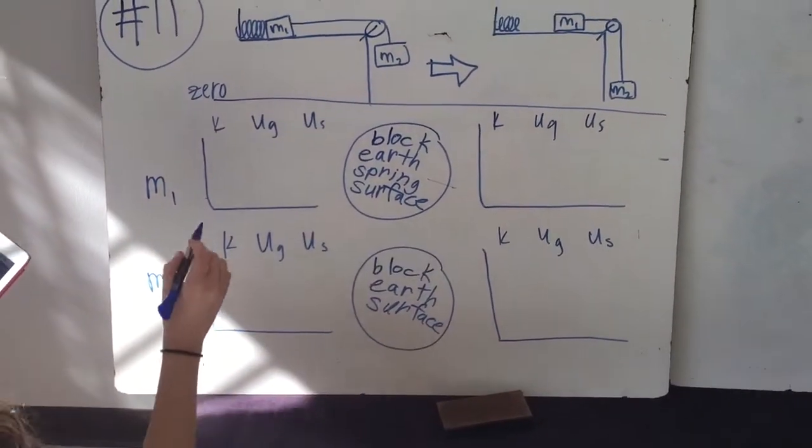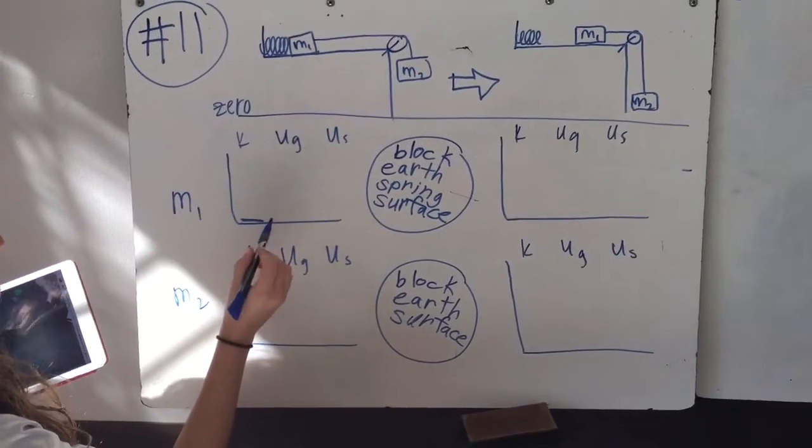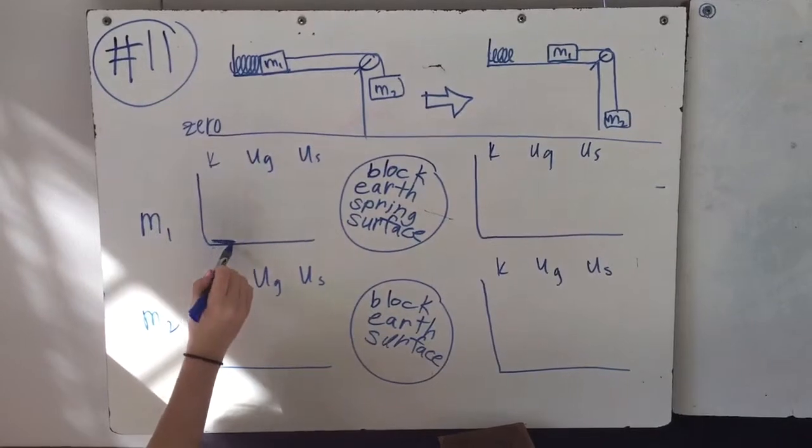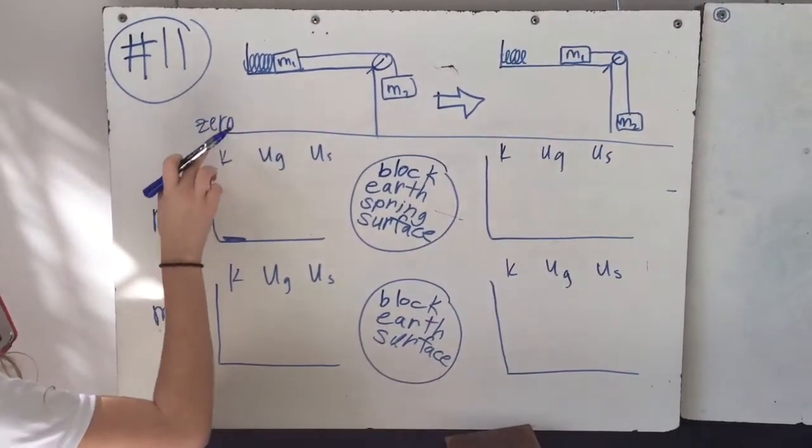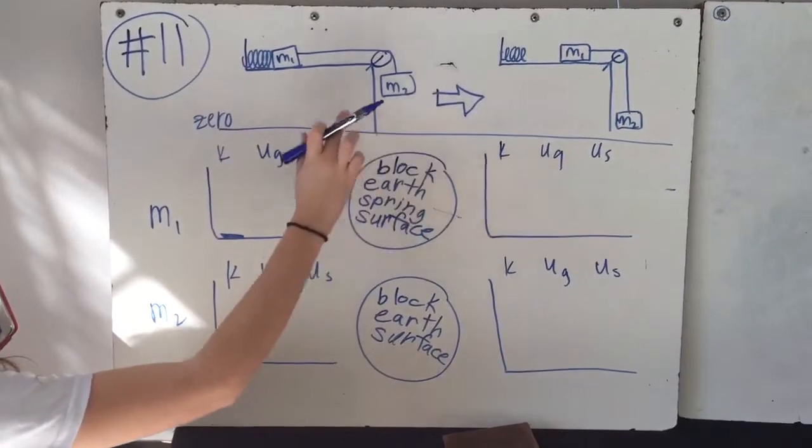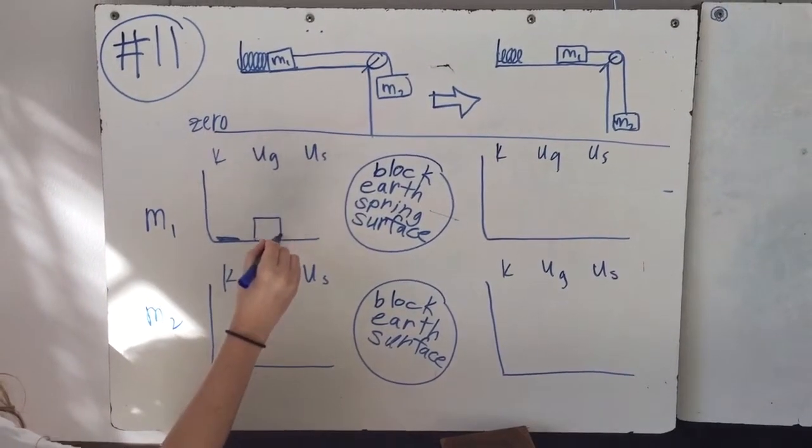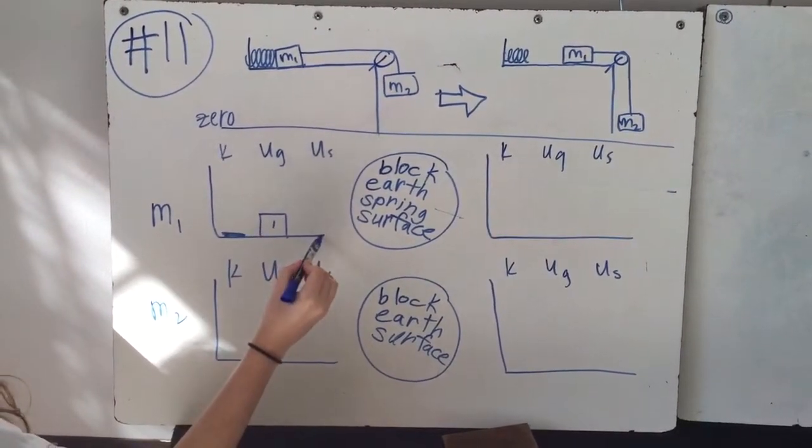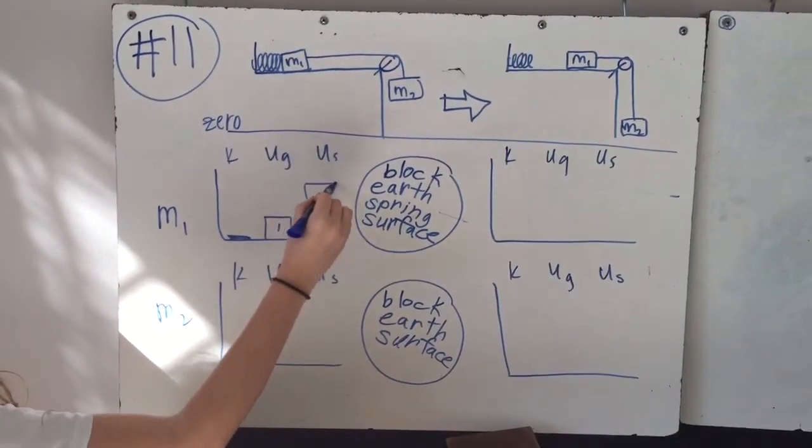Okay, so for mass 1, there's no kinetic energy because it starts off without movement. But the potential energy, there is potential energy, because if we say the ground is 0, then this has a height, so there has to be a potential energy. So we're going to put 1, and then it has potential energy for the spring as well, because the spring is still attached. So that would be 3.